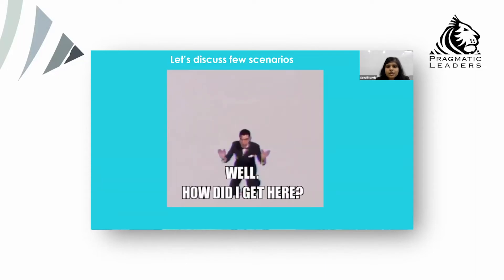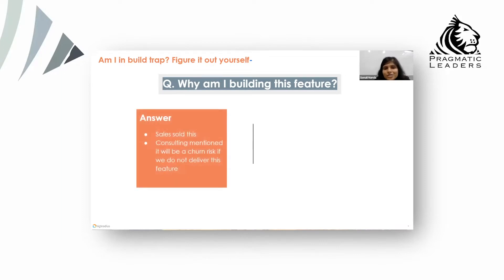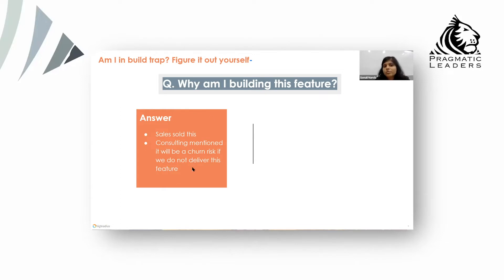How do we become aware if we are in a build trap or not? You can always ask yourself: why am I building this feature? If your answer is 'my sales team sold this,' or 'the market needs this,' or 'if I don't deliver this functionality I can lose this client,' or 'my manager asked me to build this,' or 'my client asked me to build this' — if any of these patterns are true when you ask that question, then you are in a build trap.